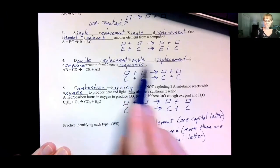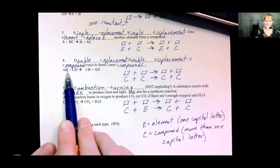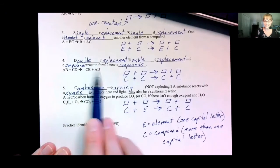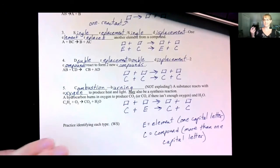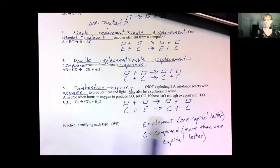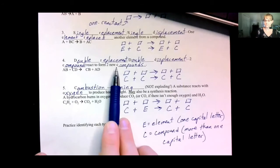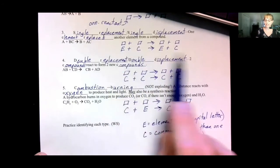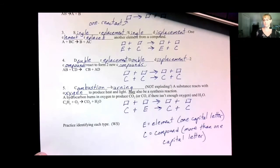A double replacement reaction is kind of like A and B are married and C and D are married, and they split up, and A marries D and B marries C. So they've kind of like traded off spouses or something. Either the husbands switch wives or the wives switch husbands, but that's how you find a double displacement reaction. So if you have all compounds and no elements, then you have a double replacement reaction.